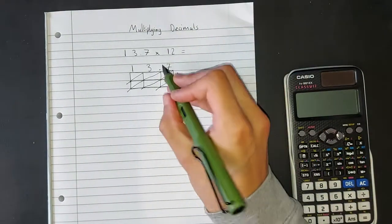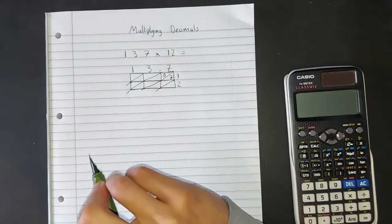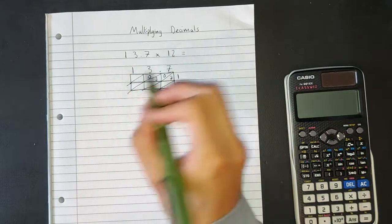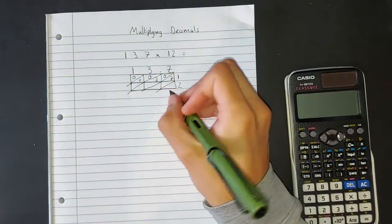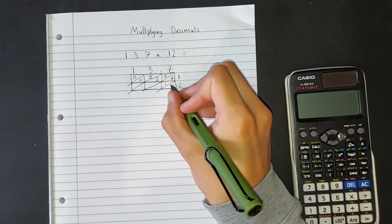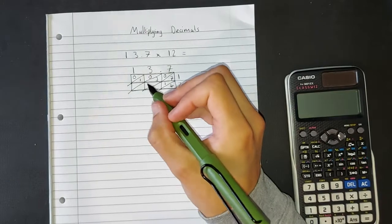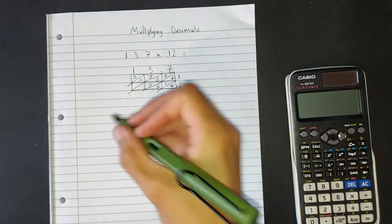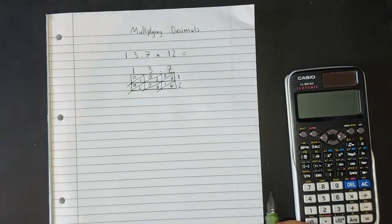So in this box, we're going to do 7 times 1, which is 7 and 0 tenths. So 3 times 1 is 3 with 0 tenths. 1 times 1 is 1 with 0 tenths. 2 times 7 is 14, so that's 1 in the tenths column and 4 in the units column. 2 times 3 is 6. So 6 is going to go there, and the 0 is going to go there. 2 times 1 is 2, so 2 is going to go there, and the 0 is going to go there.